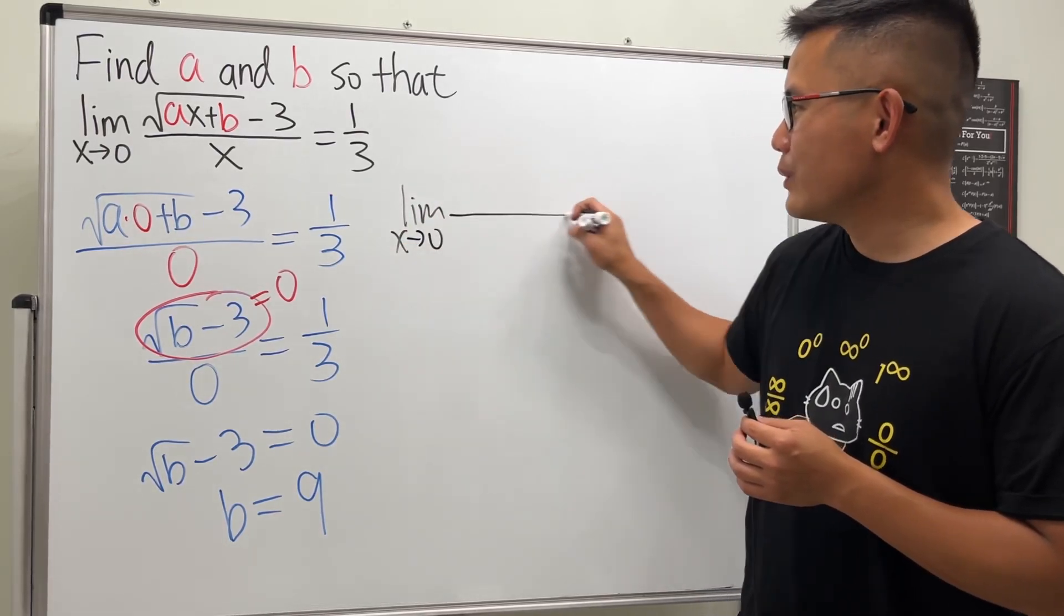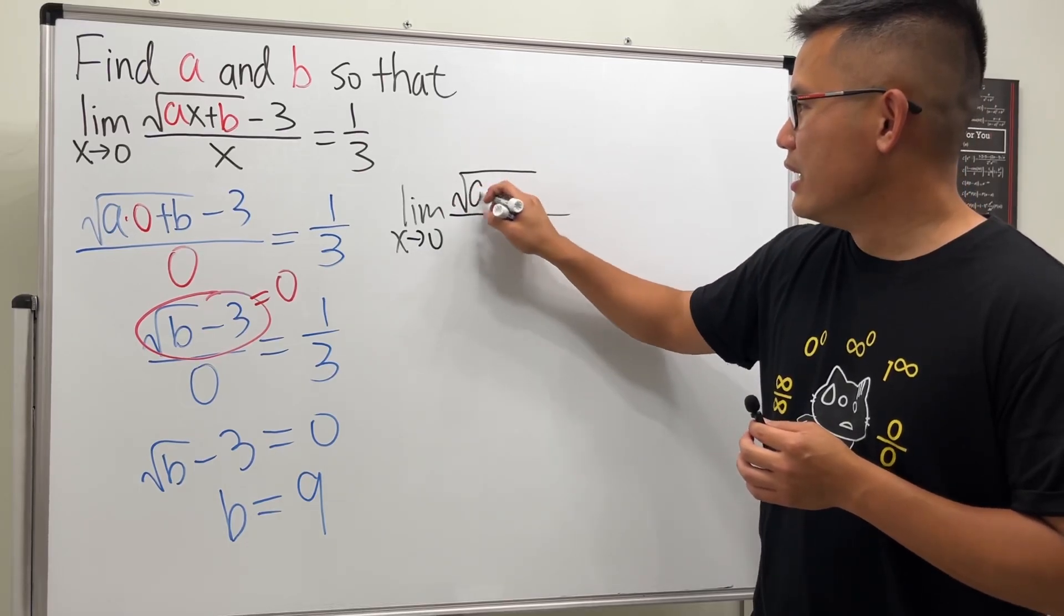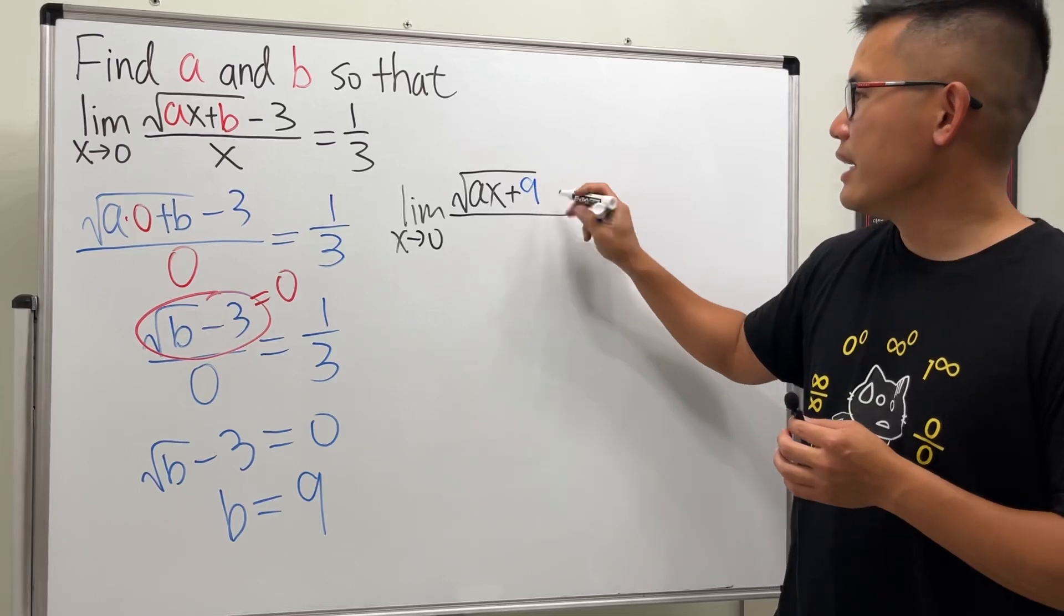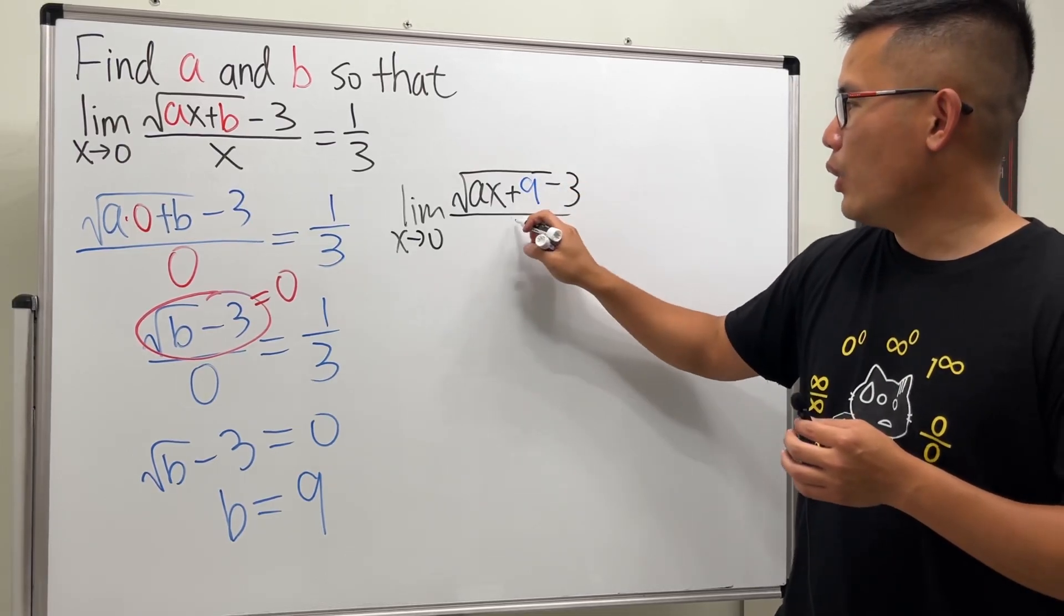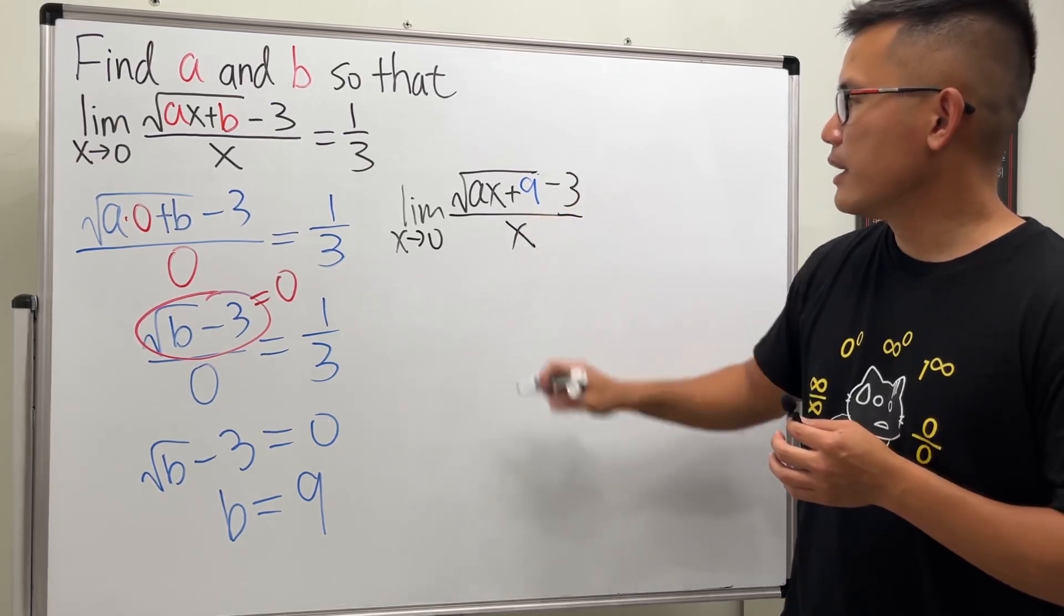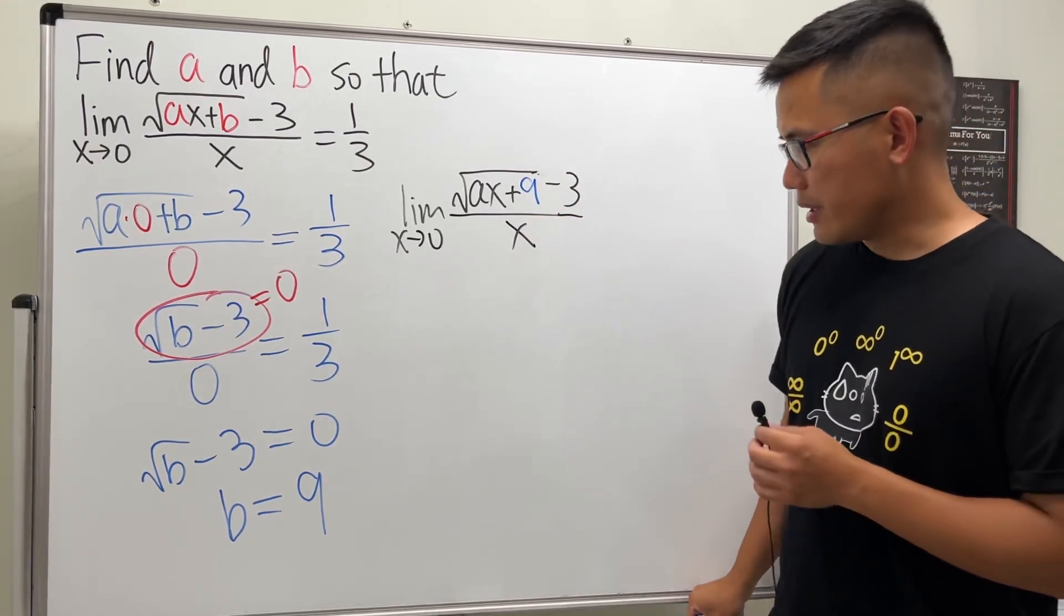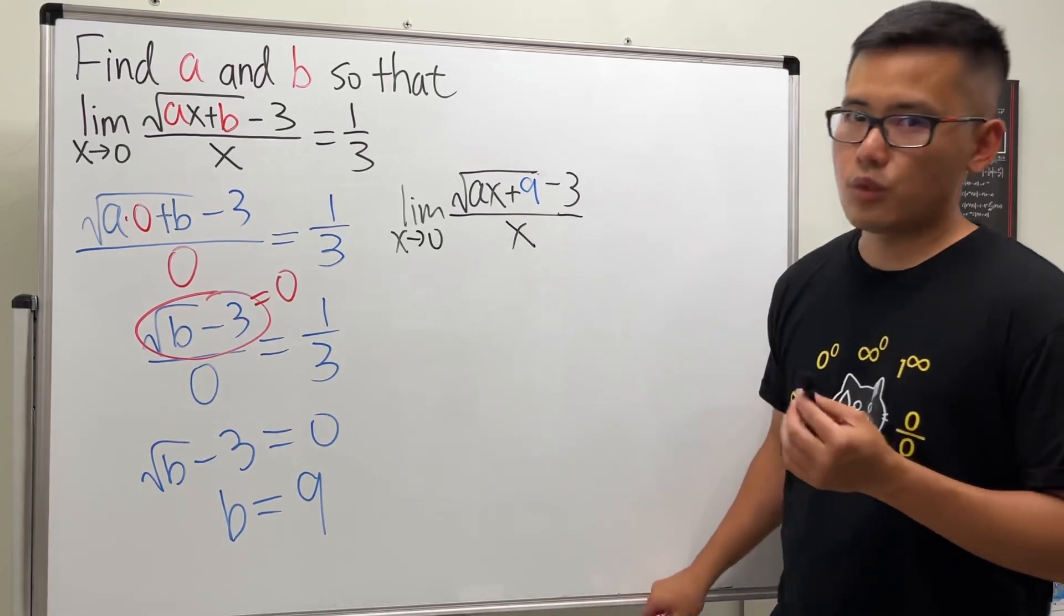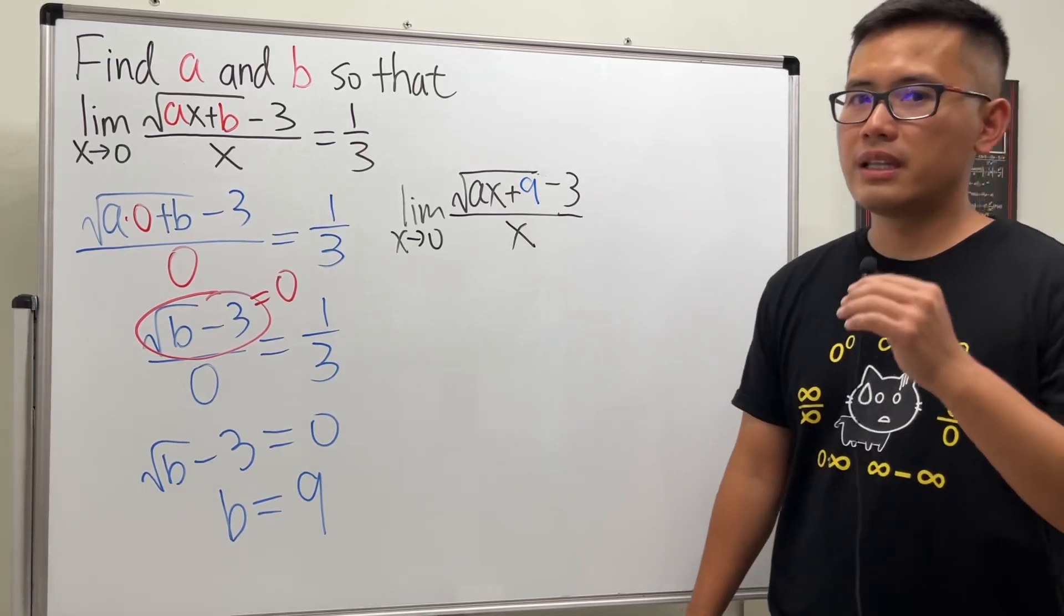So here we have the limit as x approaching zero, and then we have square root of ax—we still don't know a—but then now b is equal to nine, and then minus three, over x. So let's look at this right here. Well, what do we usually do when we have a limit like this with square roots?